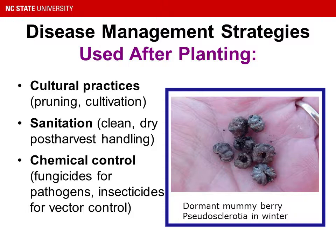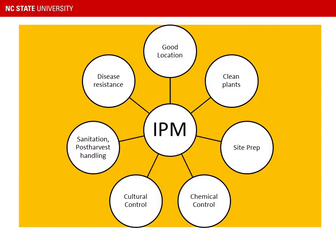Hopefully by the end of this session, we will have covered all aspects of integrated pest management, or IPM — not just chemical control and what to spray to control the disease, but all the things that can be done to reduce disease pressure in the field: disease resistance, clean plants, cultural controls, site preparation — it all factors in.